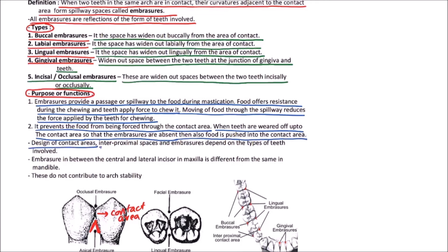Now, design of the contact area, interproximal spaces and the embraces depend on the type of teeth involved. Embracer in between the central and lateral incisor in maxilla is different from the same in mandible. That is, in between the same teeth of different arches, they will vary. These do not contribute to arch stability.